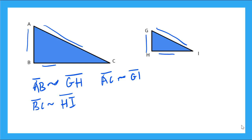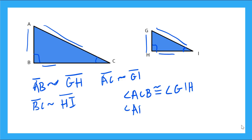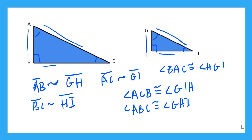Now what about my angles? Let's start with this small angle here. I could say angle ACB is corresponding to this angle over here, and we know on similar figures the angles are congruent, so corresponding and congruent to angle GIH. I can say this for all angles: angle ABC is congruent and corresponding to angle GHI. And lastly, my angles up here are corresponding and congruent, so angle BAC is corresponding and congruent to angle HGI.